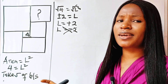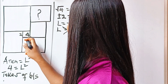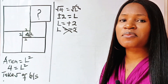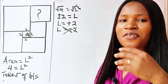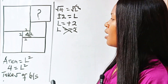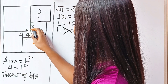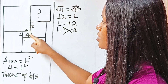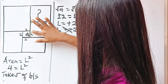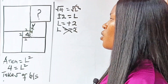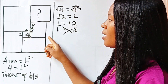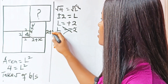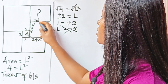Let us mark the lengths we know. This side is 2, this side is 2, this side is 2, and this side is 2, since it's a square. Now, let's call the length from here to here x. That means the length from here to here is 2 + x. Since the next shape is also a square, all its sides equal 2 + x: this side is 2 + x, this side is 2 + x, and this side is 2 + x.